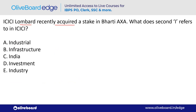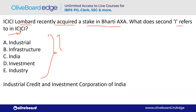ICICI Lombard recently acquired a stake in Bharti AXA. What does the second 'I' represent in ICICI? It represents Investment — option D. The full form is Industrial Credit and Investment Corporation of India. The first I is Industrial, the second I is Investment, and the third I is India.